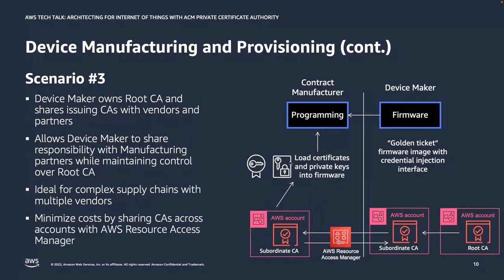This third scenario uses built-in features of ACM Private CA to offer a middle ground between the previous two scenarios. The device maker uses ACM Private CA and owns the root CA in a protected AWS account. They set up a CA hierarchy with subordinate CAs in separate accounts signed by the root, so they aren't issuing end-user certificates directly from that root CA — which is standard best practice. The key feature here is leveraging AWS Resource Access Manager, which allows you to share subordinate CAs across multiple accounts. The device maker creates a separate, policy-restricted AWS account and provides it to third-party manufacturers in their supply chain — that account can only issue certificates from the shared subordinate CAs.